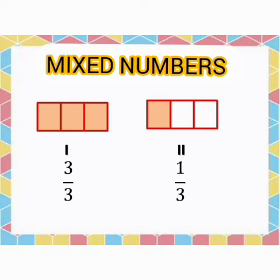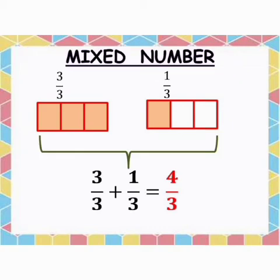Now, in 2nd Rectangle, only 1 out of 3 parts is shaded. So, we can represent it as 1 upon 3. Mathematically, we can represent the both rectangles together by adding fractions. Adding together 3 upon 3 and 1 upon 3 gives 4 upon 3. So, both rectangles can be represented by using single fraction i.e. 4 upon 3.